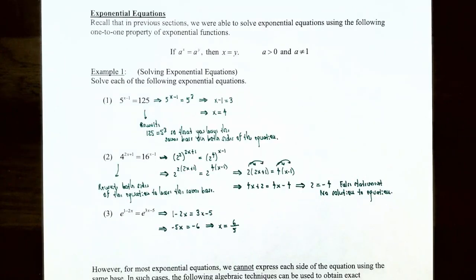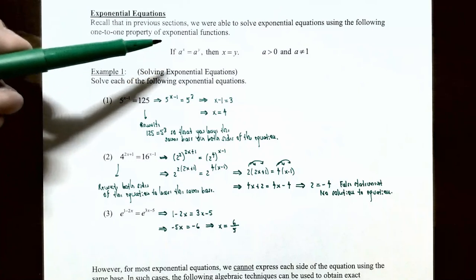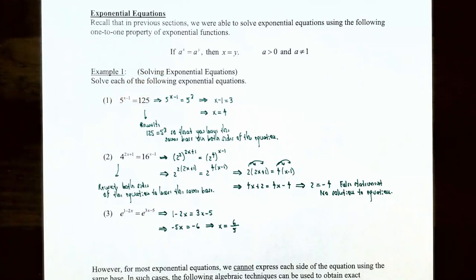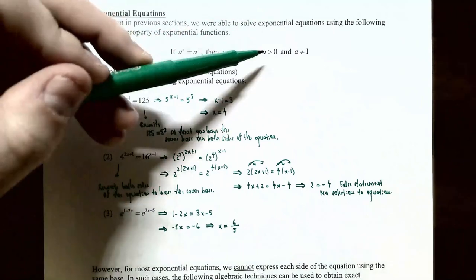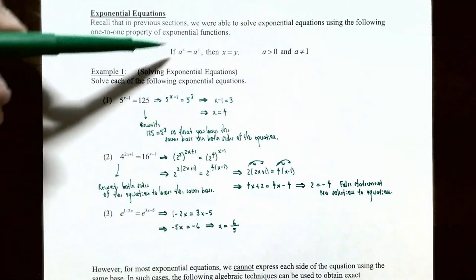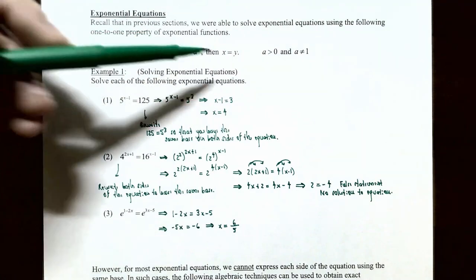Recall from previous sections we've talked about how to solve exponential equations using the one-to-one property of exponential functions. If you have base a raised to exponent x on one side, and base a raised to exponent y on the other side, since the bases are the same and equal to each other, the exponents must be equal as well. This holds as long as the base is greater than zero and not equal to one.